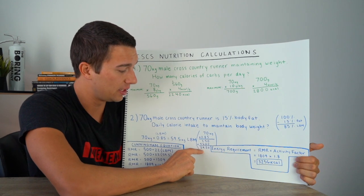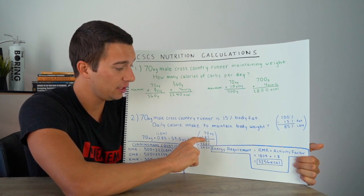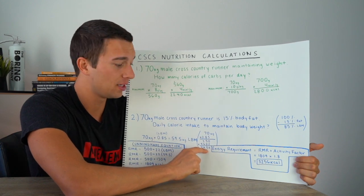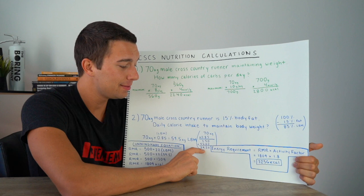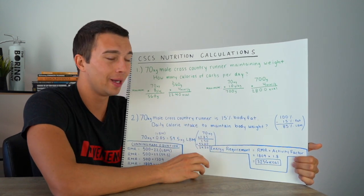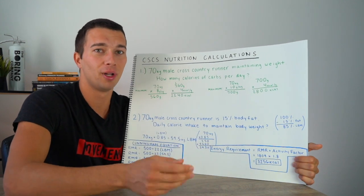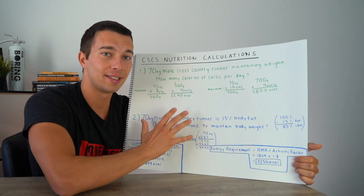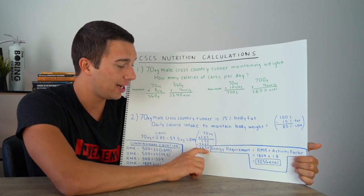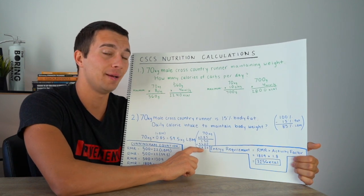And in this case, that would be kilograms. So what we calculated here was body weight times the percent of lean body mass to get us 59.5 kilograms of lean body mass. This means that 59.5 kilograms of this cross country runner's weight is lean body mass, which is basically everything but fat, bone, blood, water, muscle, all that stuff is lean body mass. And that's what's accounted for here with that 59.5 kilograms. And that is what we're going to actually use in the Cunningham equation.